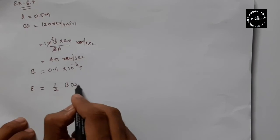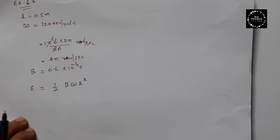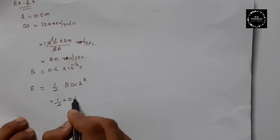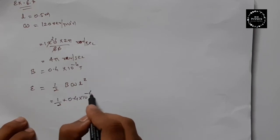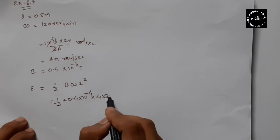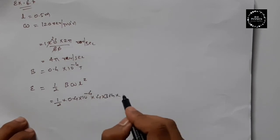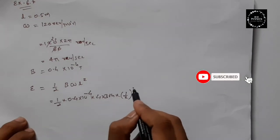Now we can simply say that emf equals one half B omega L squared. So we have to add this. One half, B will be 0.4 times 10 raised to minus 4, omega is 4 times 3.14, L is 0.5, 0.5 means what? 1 by 2 squared.